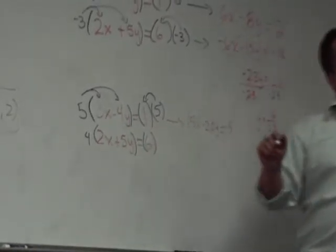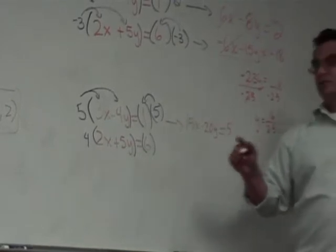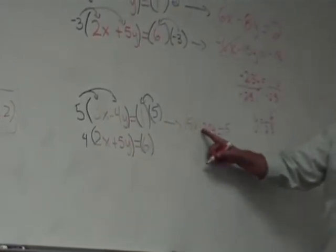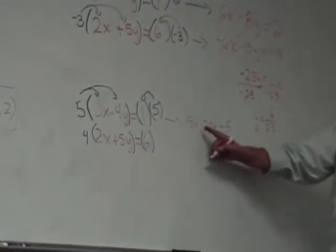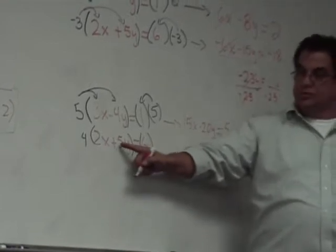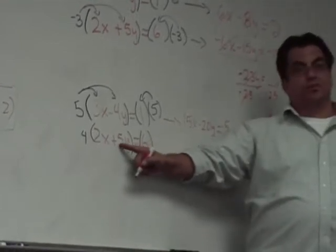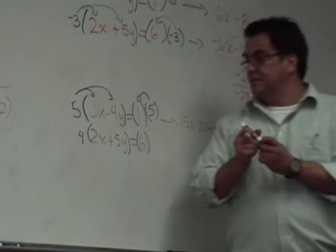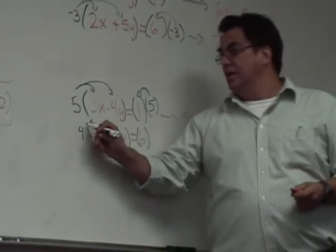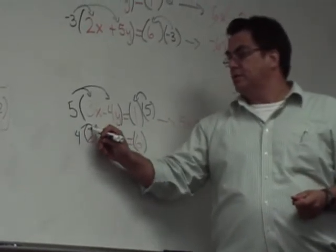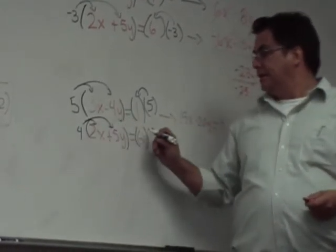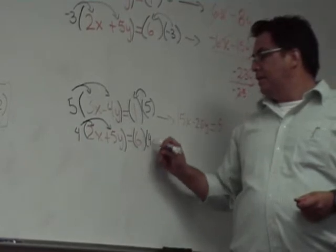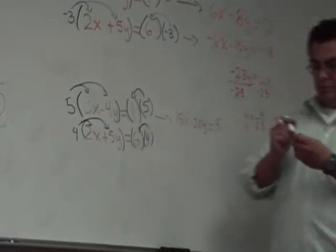Now the bottom equation—we decided not to use negative 4 because we already have a negative 20 here. I need this to be a positive 20, so I'm going to multiply by positive 4 on all sides of this equation. I'll distribute the 4 here.